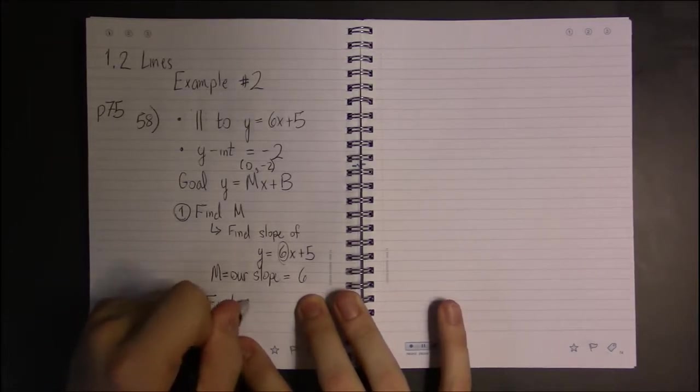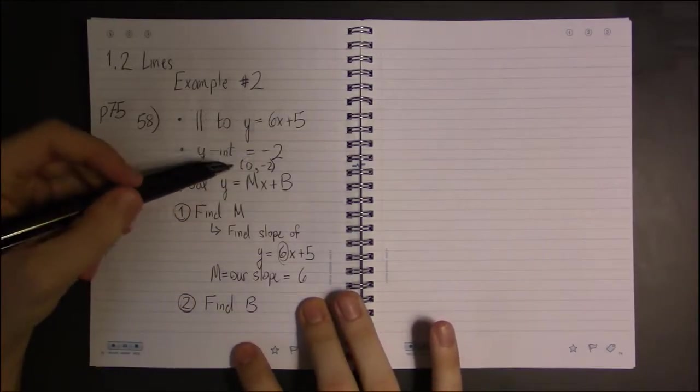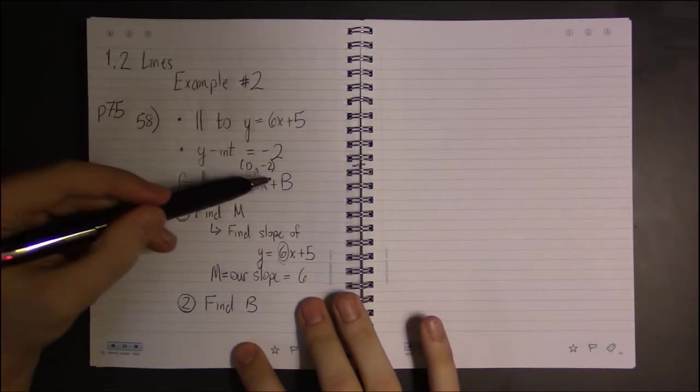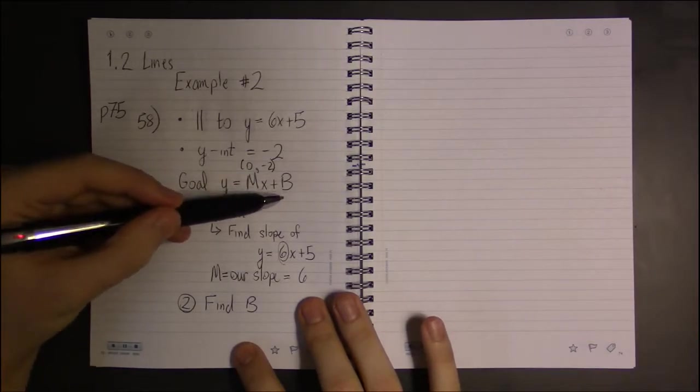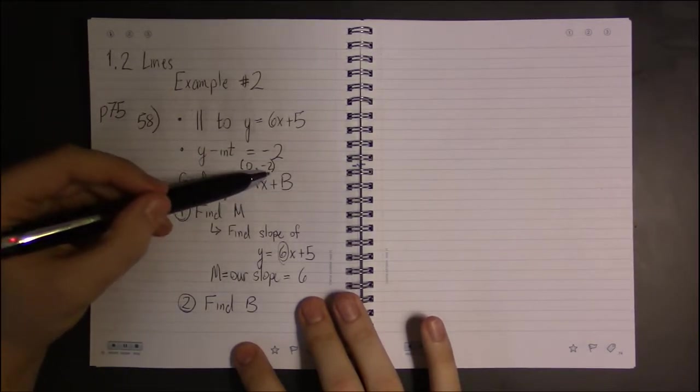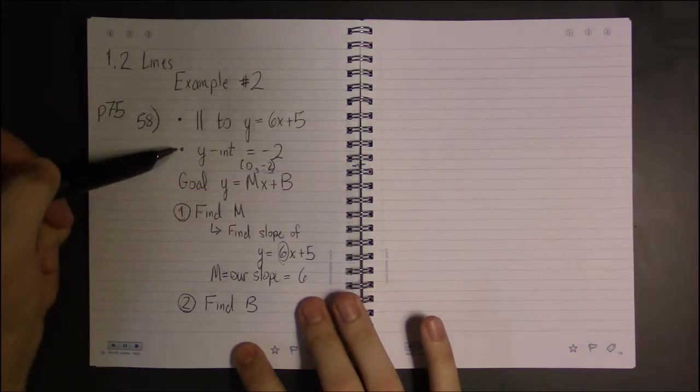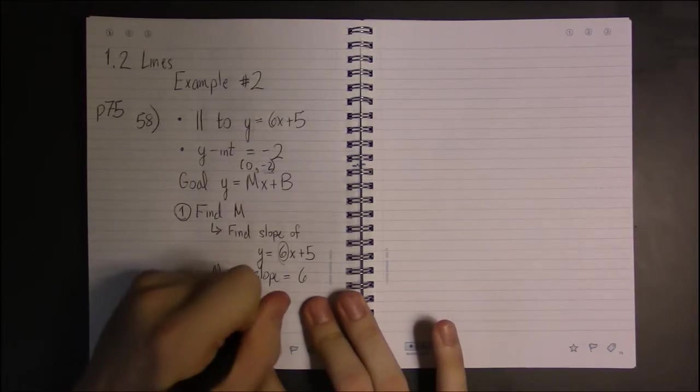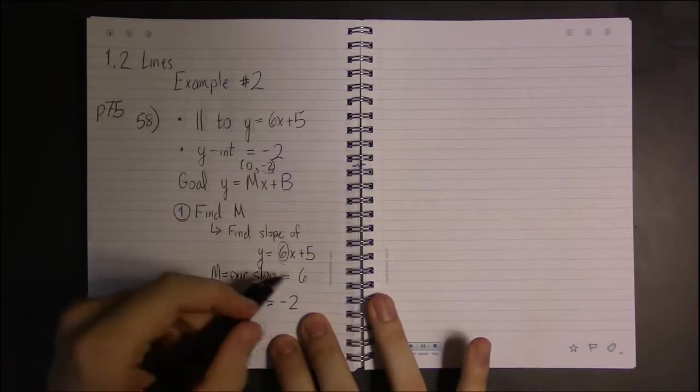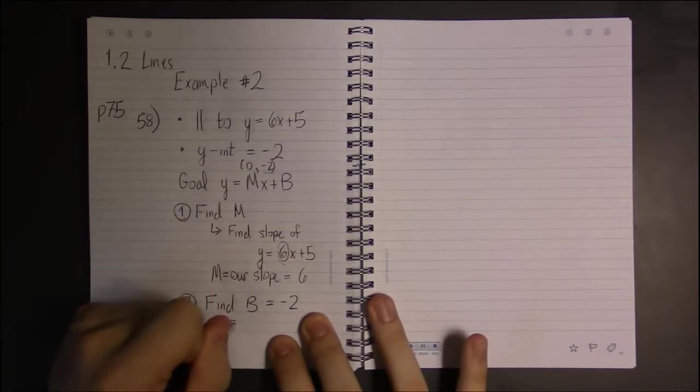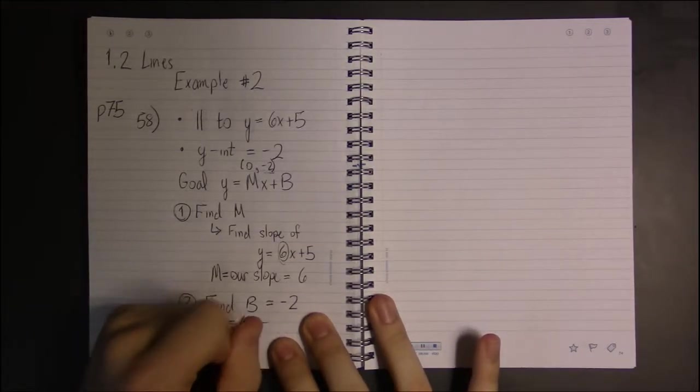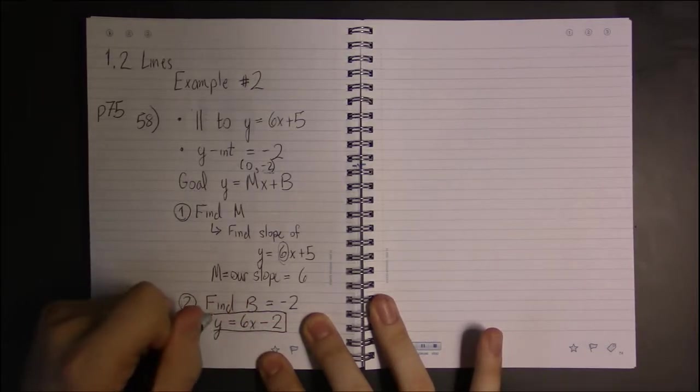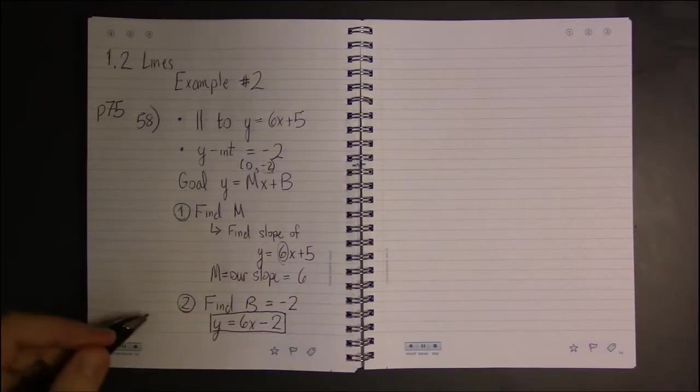And if you want, you could use this point or point slope formula to plug this in and then determine b. But b plays the role of the y-intercept - b is the y-coordinate of the y-intercept. This condition here tells us b is minus 2. So our line has a slope of 6 and a y-intercept of minus 2, and that's all there is to this one.